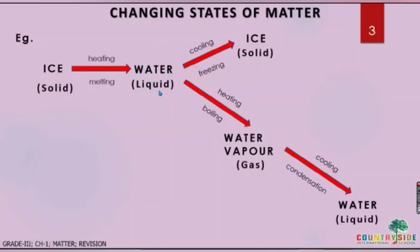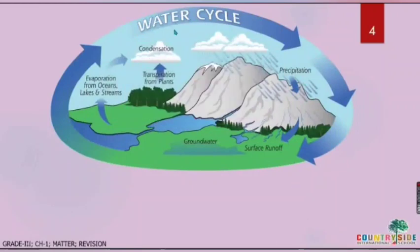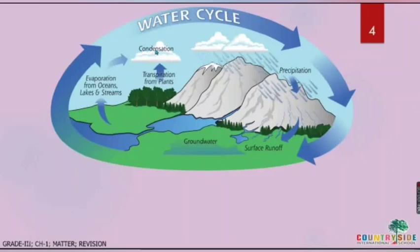This is about the changing states of matter. The next topic was the water cycle. The water cycle is the best example of changing states of matter. What is the water cycle? In the water cycle there are many processes. The first process is evaporation and transpiration. With the help of evaporation and transpiration, water gets evaporated and mixes into the air. After cooling of this water vapor, that process is called condensation.